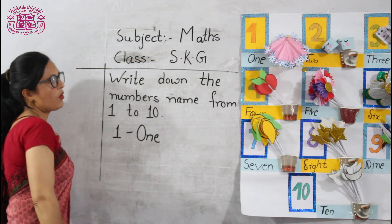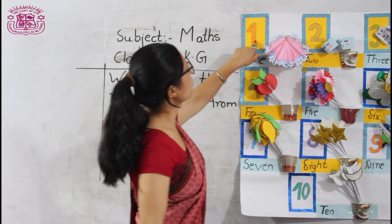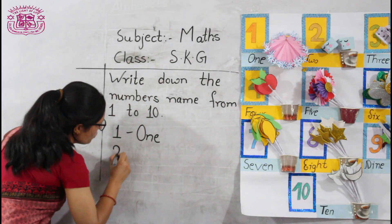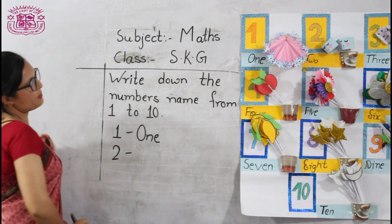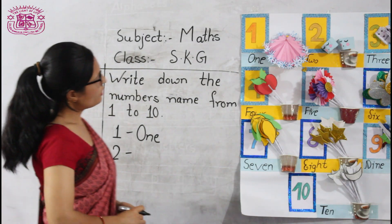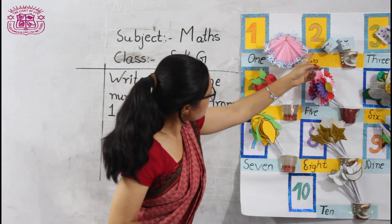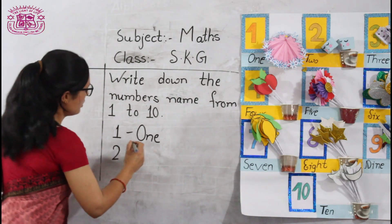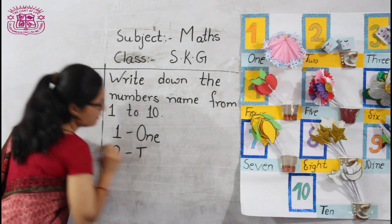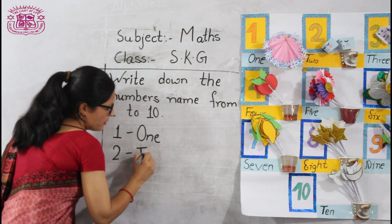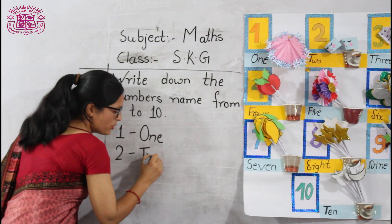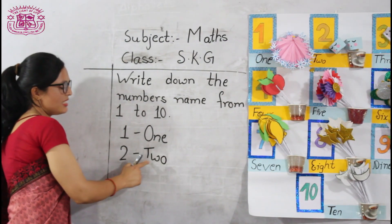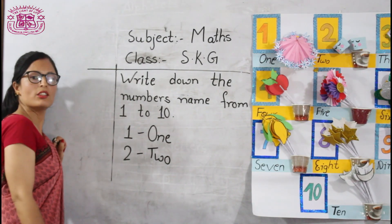What comes after 1? Look here. What comes after 1? 2. Okay. What is the spelling of 2? T-W-O. Very good. T-W-O, 2.